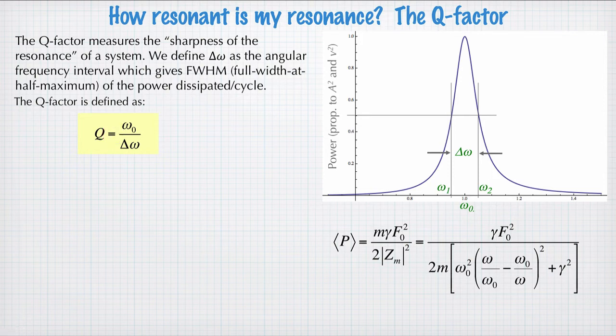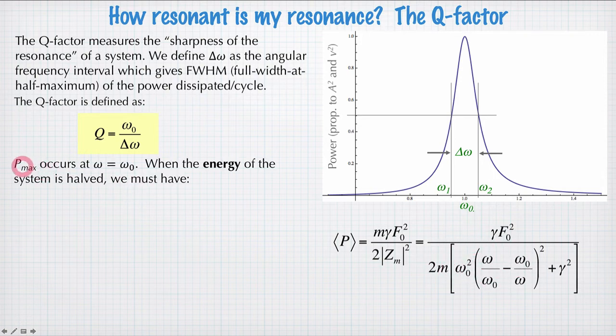How do we find Q? In other words, how do we find this frequency at half maximum and this frequency at half maximum? Well, here's our equation for the dissipated power. I've re-expressed it slightly differently here, but it's the same equation. So we need to find where this power drops by a factor of 2. So P_max occurs when ω is equal to ω₀. But when the energy of the system is halved, we must have these two terms equal to each other.